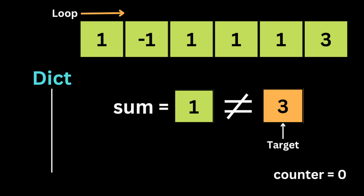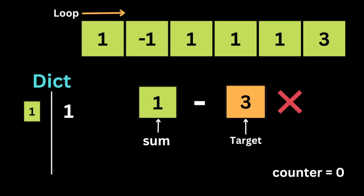We loop through the array starting at the first integer, 1, and add it to sum. The first condition: if the current sum equals the target k, we've found a subarray and increment the counter — here 1 is less than the target. The second condition: we check if the difference between sum and the target exists in the dictionary. The idea is to check if we already have a subarray equal to that difference, meaning the remaining portion equals k.